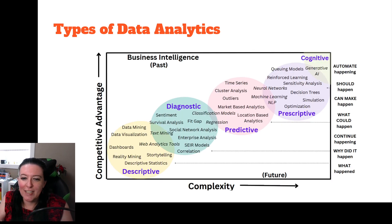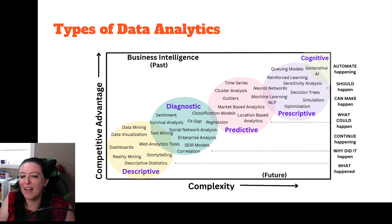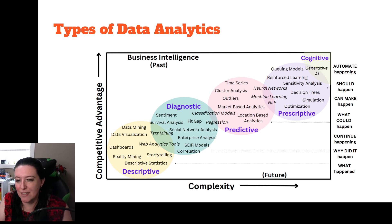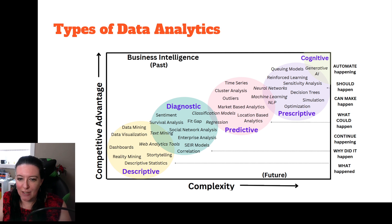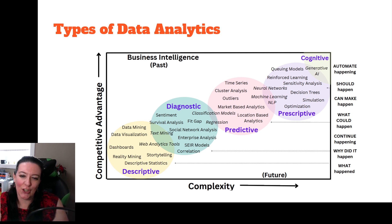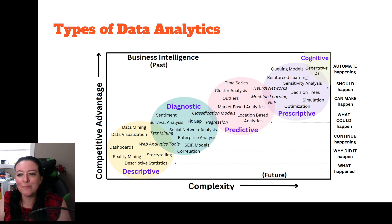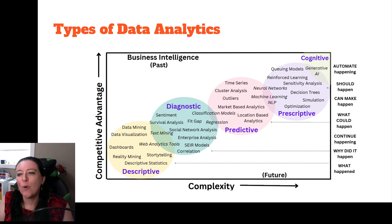Descriptive analytics is the least complex and provides the least amount of competitive advantage. As we get into the higher levels, that's where big data, machine learning, and AI come in. Because they're more complex, we need the equipment to be able to do the analysis.